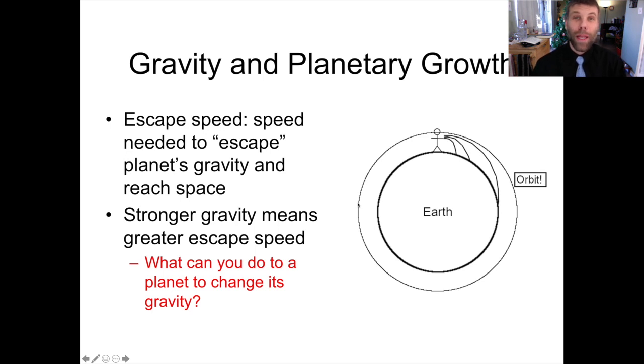What could you change about a planet to increase the strength of its gravity and therefore increase its escape speed? Pause the video, think for a second, try and come up with an answer. It's okay, I'll wait. Okay, hopefully you figured out that to increase the strength of gravity of a planet, you could increase its mass.